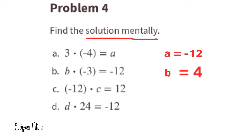Part c: negative 12 times what number equals positive 12? Since a negative times a negative equals a positive, and 12 times 1 is 12, then the value for C must be negative 1.